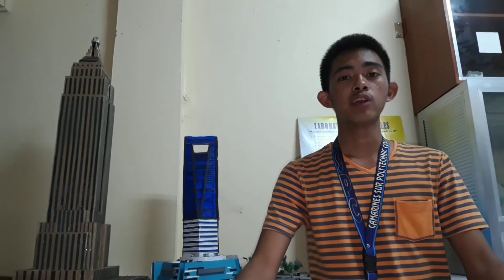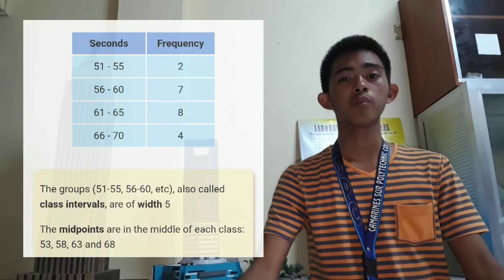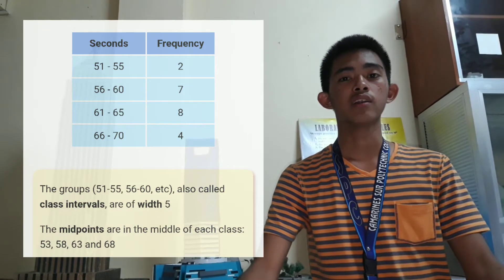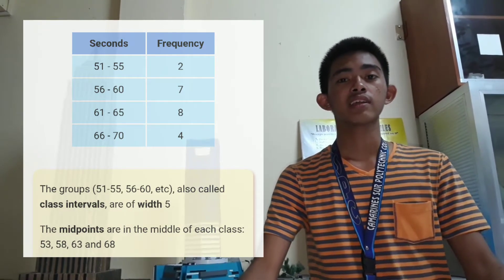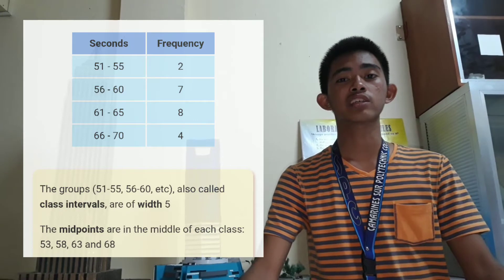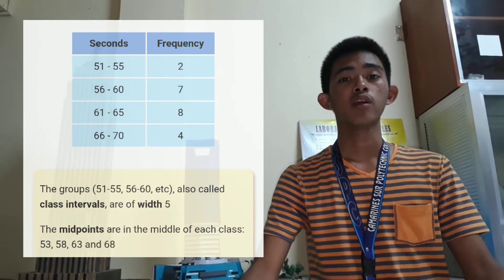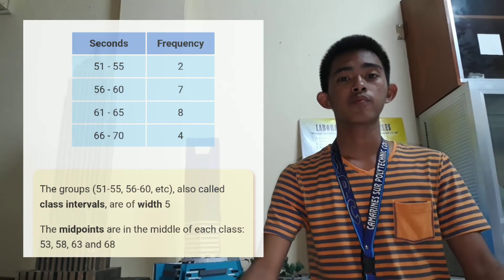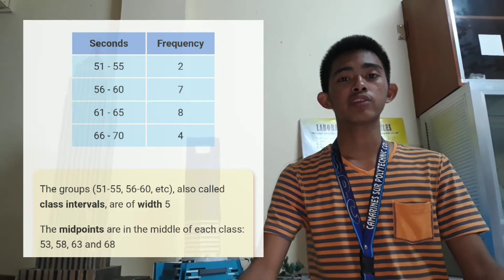How to find the mean? We can find the mean by using the midpoints. It is also called the midpoint formula — we simply take the average of each class. For example, 51 and 55: the average is 53.